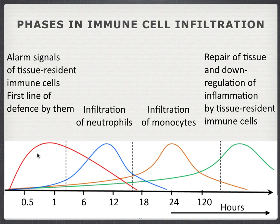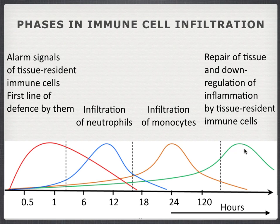Here you can see the phases in the innate immune response. First you get alarm signals from tissue resident immune cells, and they start the first fight — eating microorganisms, for instance. When they think they need more help, you get infiltration of neutrophils. Of course then it becomes a bit messy, and you need infiltration of monocytes to help with repair. Then you get upregulation of tissue repair and downregulation of inflammation by tissue resident immune cells.